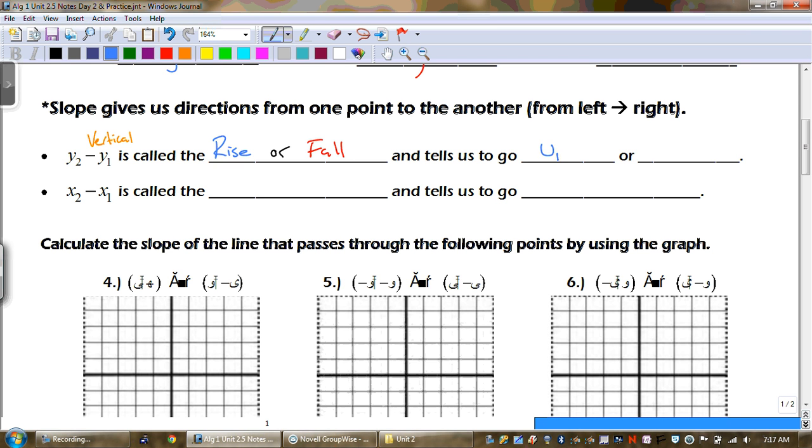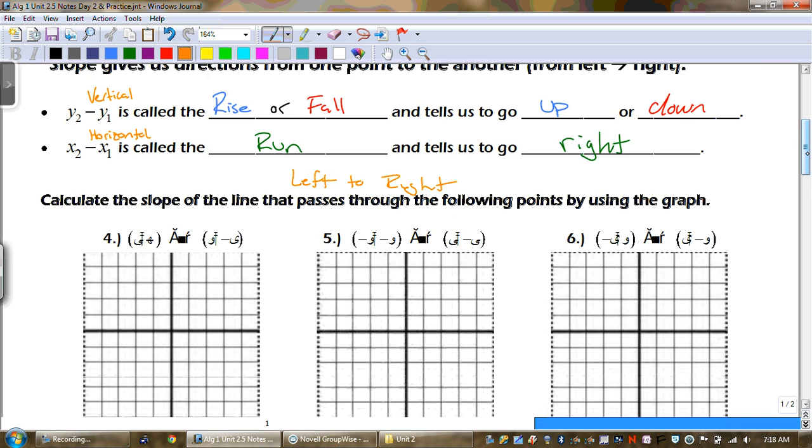And then the x2 and x1, that's our horizontal change, and that's what we call the run. And the run always tells us to go right. And remember, anytime we're looking at stuff like this, we always look at the graph from left to right, just like you're reading a book.